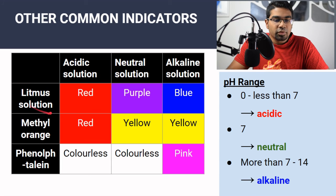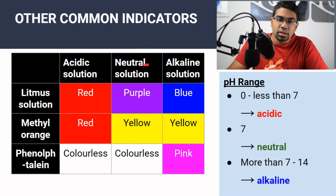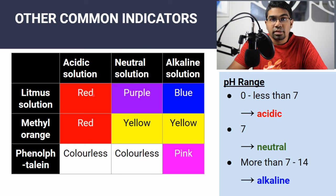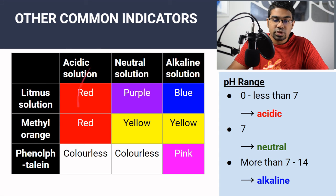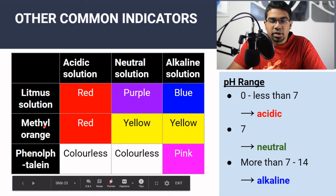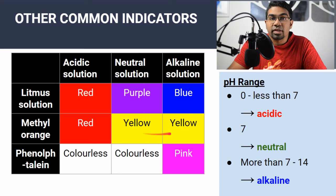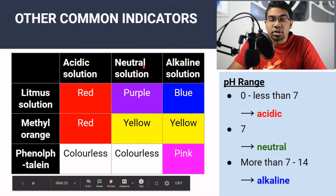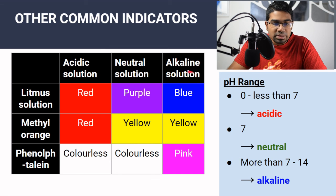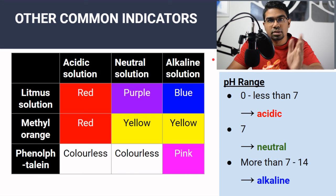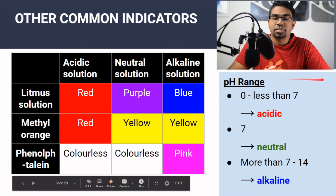Litmus can also exist in solution form. A few drops of litmus solution in a neutral substance gives purple; acidic gives red; alkaline gives blue. Methyl orange in a highly acidic solution is red; in neutral or alkaline solution it is yellow — so methyl orange is only useful for identifying highly acidic substances. Phenolphthalein is pink in alkaline solution, and colorless in both neutral and acidic solutions. Note that these indicators cannot give us specific pH values — they only tell us whether a substance is acidic, neutral, or alkaline. For specific pH values, use universal indicator.